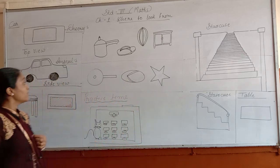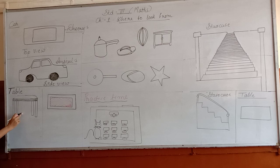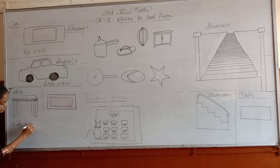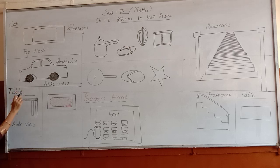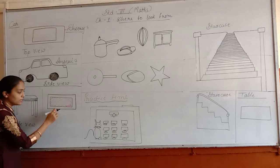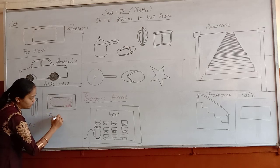Now next is a table. You can see this table. Which view is this? This is the side view of a table. And this is the top view of a table. If you look at the table from the top, you will get this picture. This is the top view of a table.